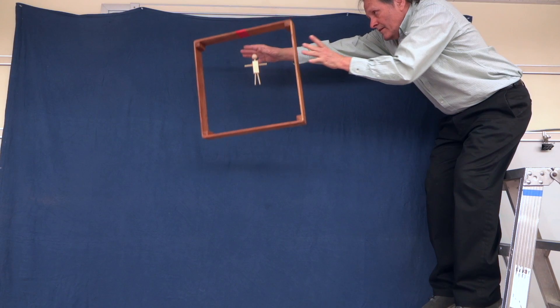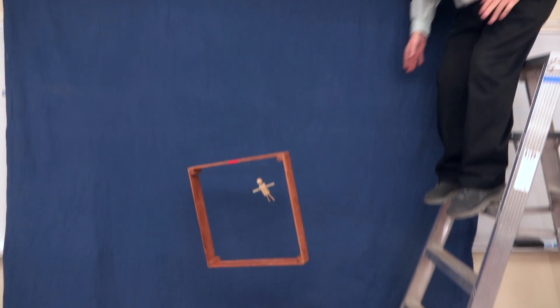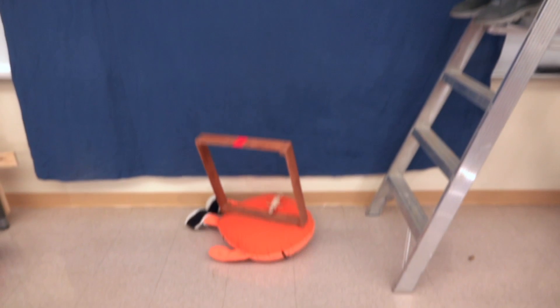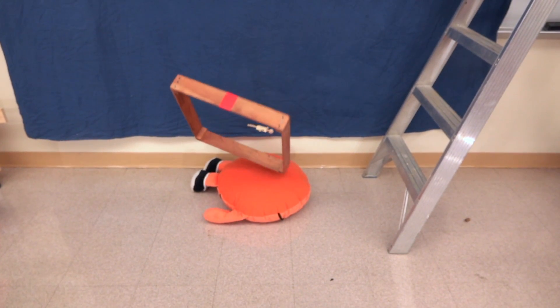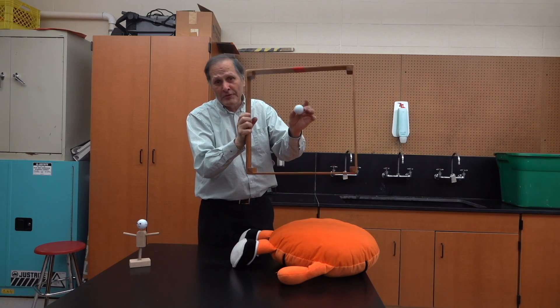Watching it in slow motion, we see the little person inside the elevator maintains the same position as both objects fall. To make it a little bit easier to see, I could use this golf ball.